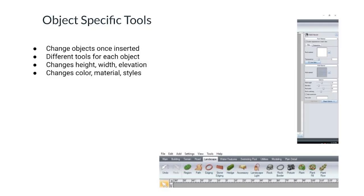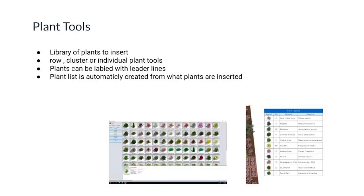Object-specific tools change the design of an object after it is inserted. There's a specific set of tools for each type of object. Some common ones include changes in height, width, elevation, color, material, and style. These are best used in perspective view. The other two softwares don't have this feature.